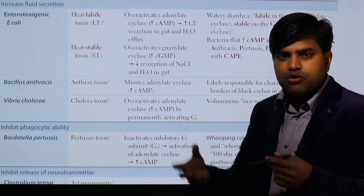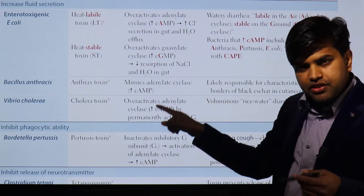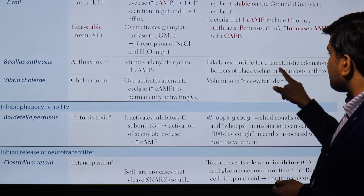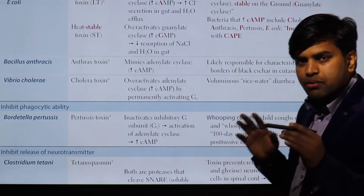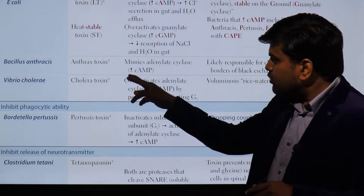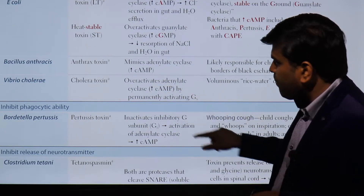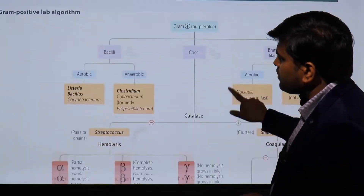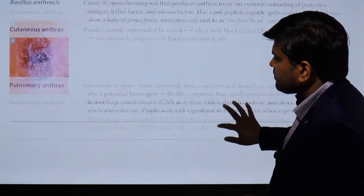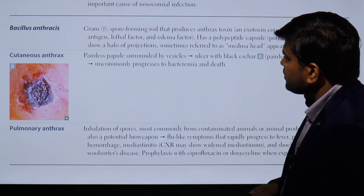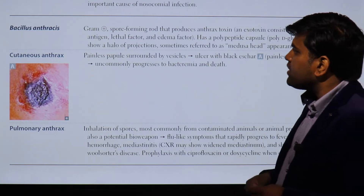Bacillus anthracis releases the anthrax toxin, which mimics adenylate cyclase, increases cyclic AMP, and is responsible for the characteristic edematous border of the black scar in cutaneous anthrax. The exotoxins consist of three components: protective antigen, lethal factor, and edema factor. It also has a polypeptide capsule, which is a very important distinguishing feature.